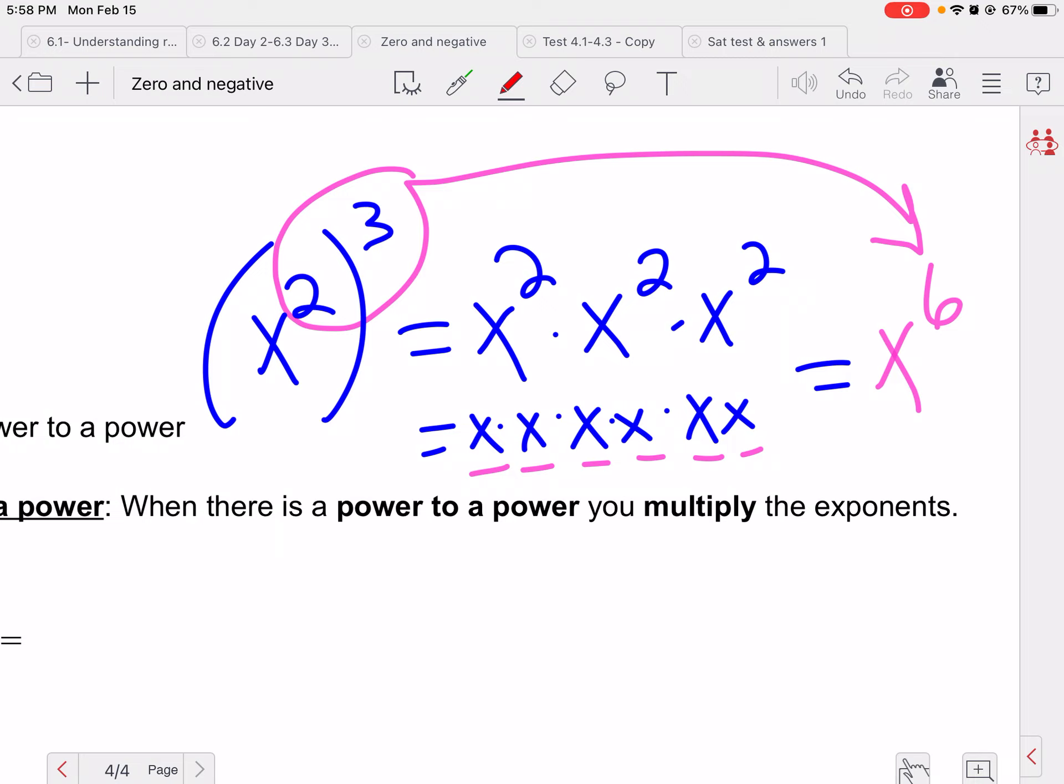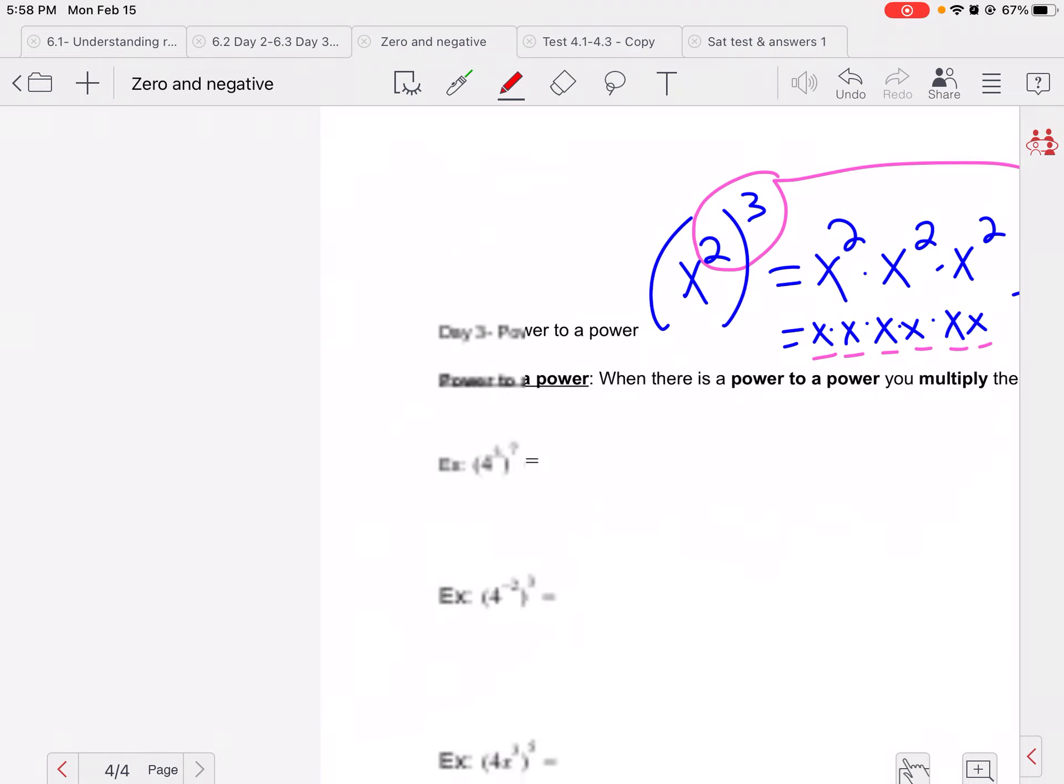So product rule, remember we multiply the bases, so we add the exponents. Quotient rule, if we divide the bases, we subtract the exponents. Zero exponent rule would mean anything to the zero power is one.